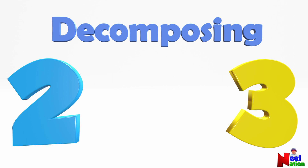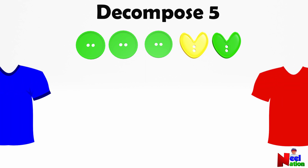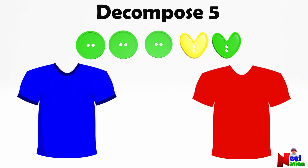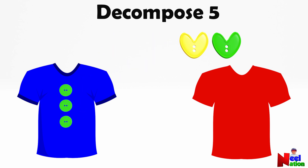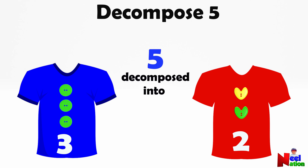Let's find out! Let's begin by decomposing number five. Here you have some buttons and two shirts — one blue shirt and one red shirt. How many buttons do you see? Five! You are right. Can you now place all the round buttons on the blue shirt and all the heart-shaped buttons on the red shirt? There are three buttons on the blue shirt and two buttons on the red shirt. Here you decomposed all five buttons into smaller parts of three and two.